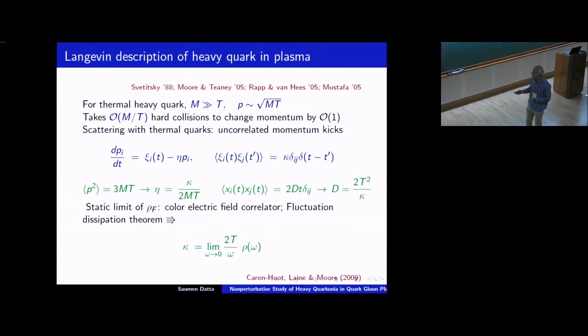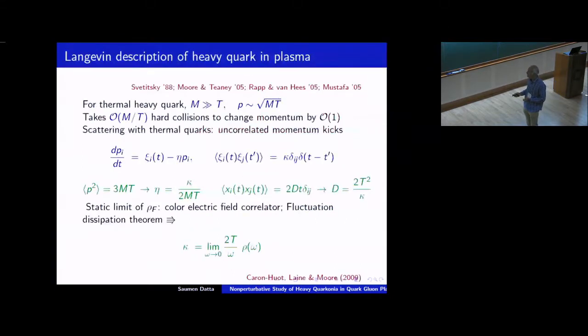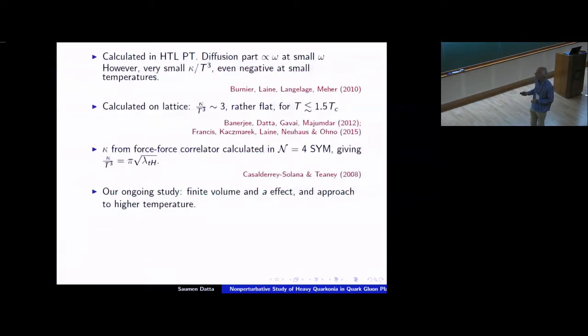It's just the force-force correlation function, Brownian motion kind of setup. And since we are handling a non-relativistic system, there are some standard relations that you can write down, which will allow you to get other objects you may be interested in from this kappa. Okay. So this object was studied in perturbation theory. And indeed, you see a diffusive part at small omega, but the value that you get for the diffusive part is very small and even turning negative at temperatures which are like 1.5 Tc or so.